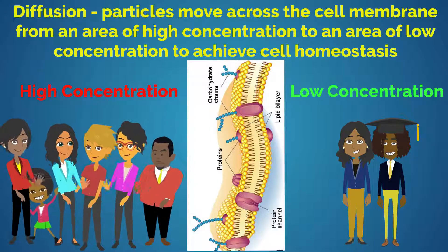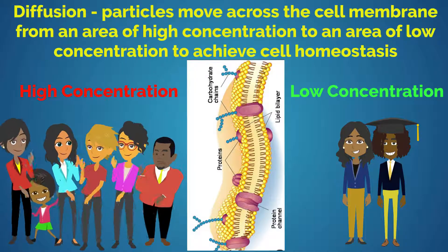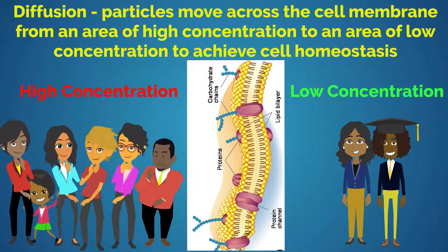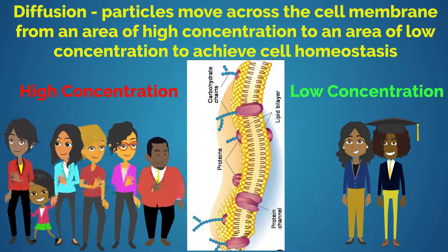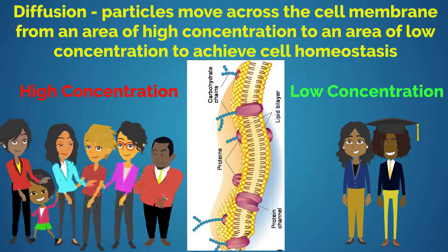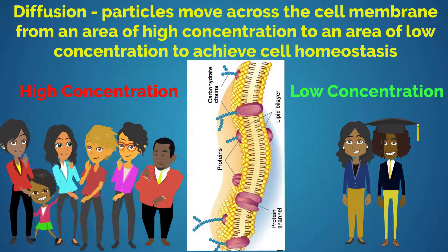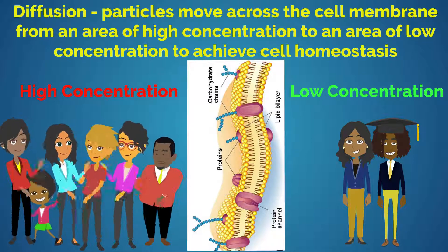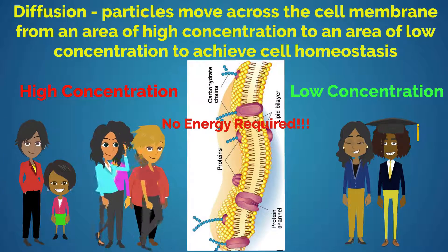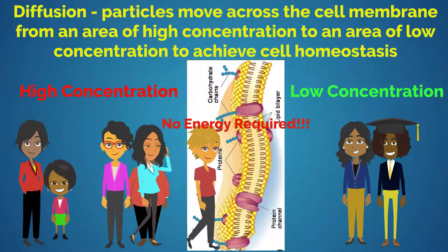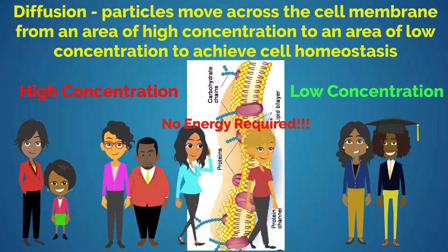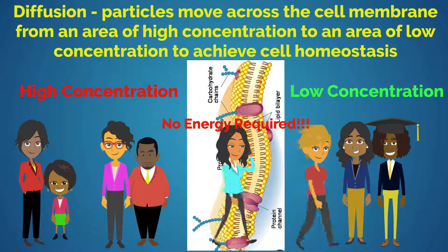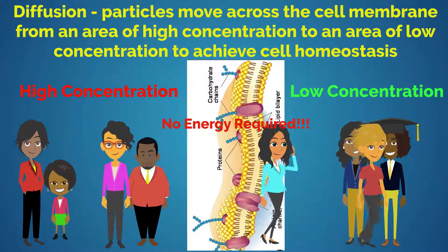In diffusion, particles move across the cell membrane from an area of high concentration to an area of low concentration to achieve cell homeostasis. Notice in the example below, there are a large number of particles on the left-hand side which results in a high concentration. On the right, there are a few particles which results in a low concentration. Look at how the particles have moved across the cell membrane from high to low concentration to help the cell maintain homeostasis, or internal and external balance.